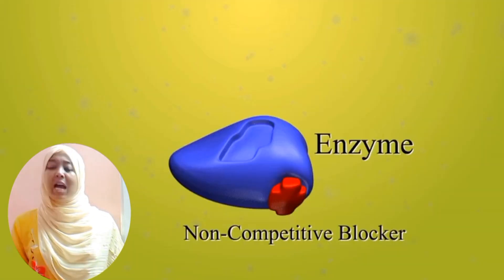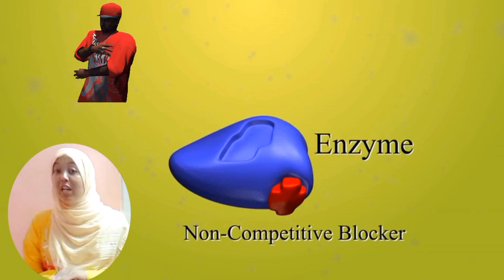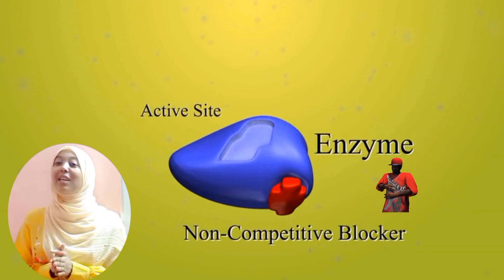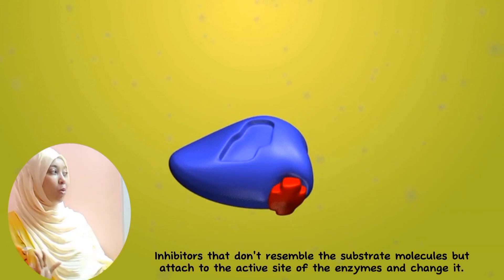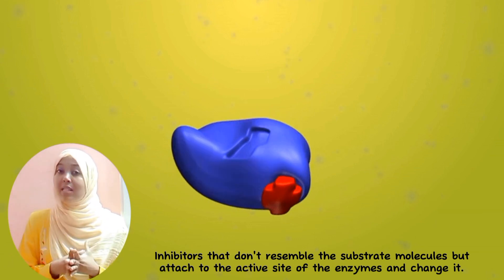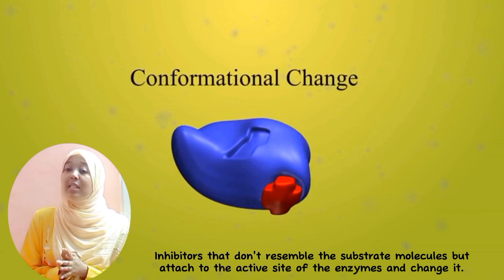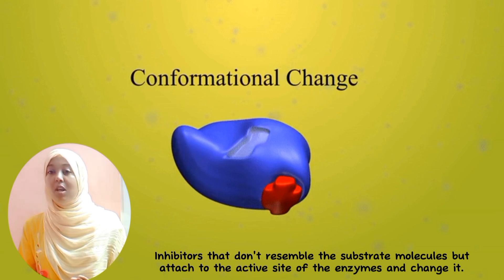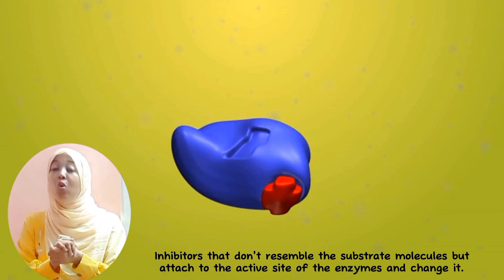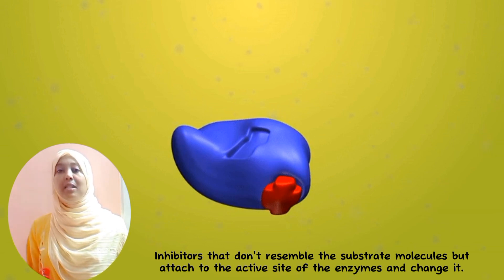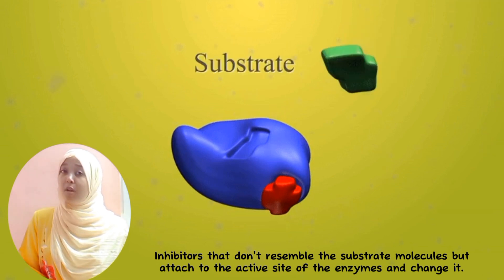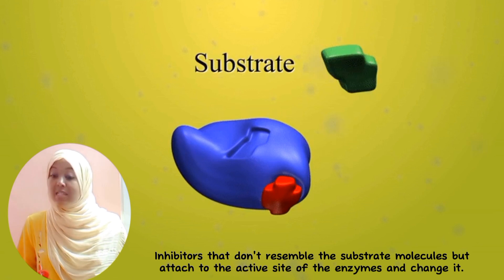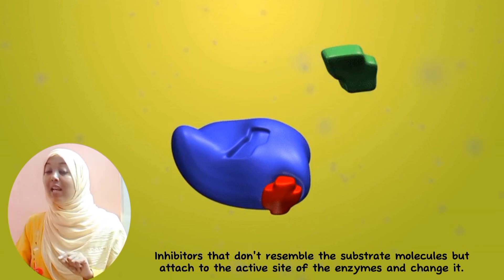Non-competitive inhibitors are the more dangerous type. They do not need a shape similar to the substrate — they simply bind onto the enzyme, sometimes not even at the active site, and prevent the enzyme from catalyzing the substrate. When they bind, they can even change the shape of the enzyme itself. This means the enzyme can no longer bind to substrate molecules in the future, whether the inhibitor is present or not — a permanent and irreversible effect.